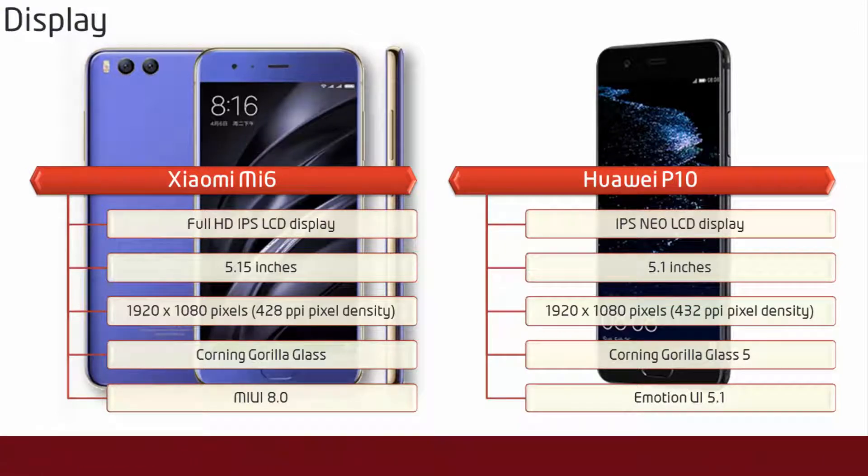Whereas the P10 is a 5.1 inch device with an IPS Neo LCD display having 1920 by 1080 pixels and 432 ppi pixel density. It comes with Corning Gorilla Glass 5 skin protection with Emotion UI 5.1.